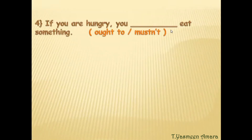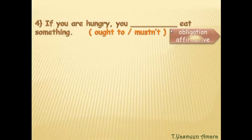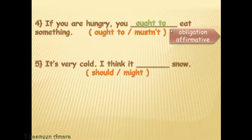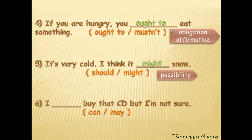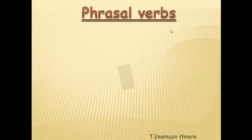Number four: 'If you are hungry, you ___ eat something' — choices: ought to or must. This expresses obligation in affirmative form, so we use 'ought to.' Number five: 'It's very cold, I think it ___ snow' — choices: should or might. This expresses possibility, so we use 'might.' Number six: 'I ___ buy that CD, but I'm not sure' — choices: can or may. This expresses possibility, so we use 'may.'